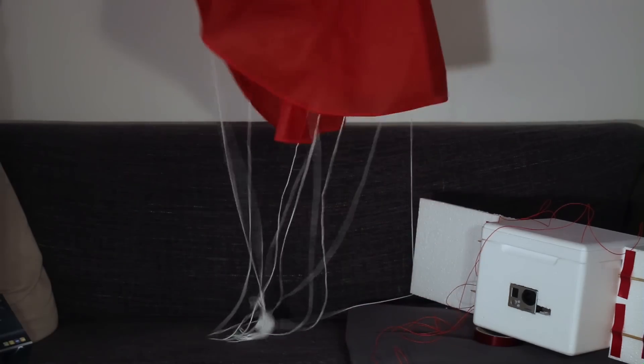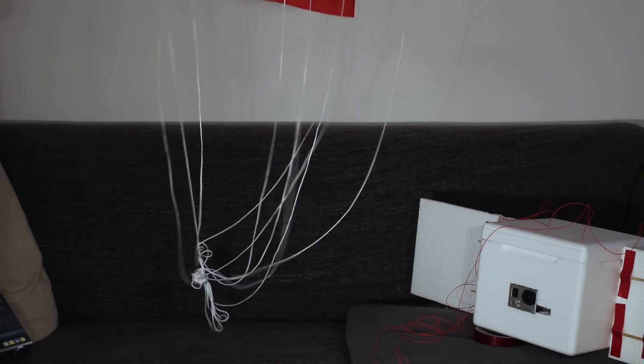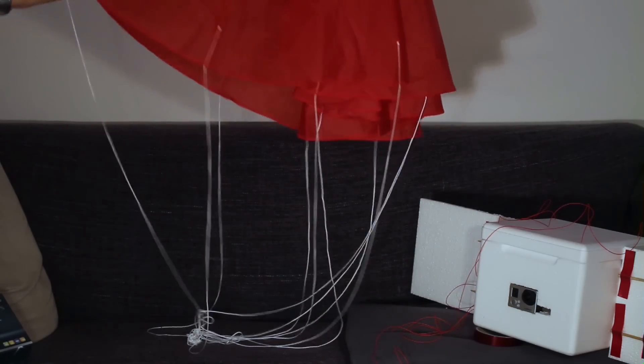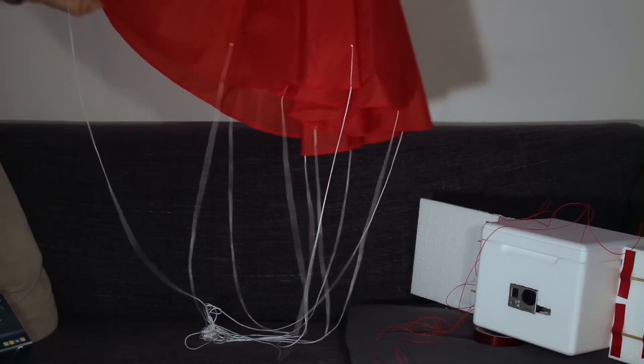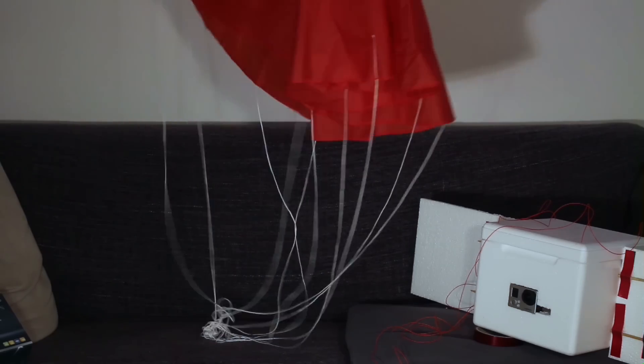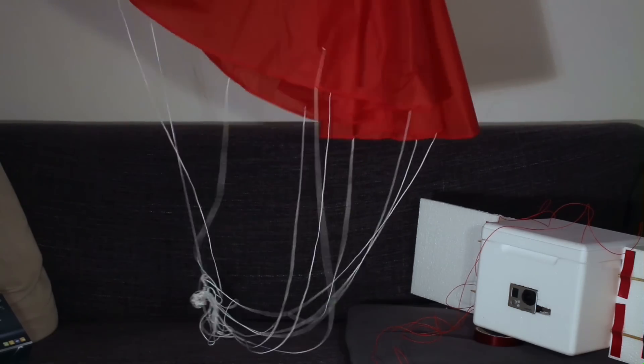To land all my gear safe on earth I need a parachute which breaks the fall from space to 7 meters per second. The parachute is essential for a safe return to earth. It is attached right under the balloon and will slow down the fall from space.